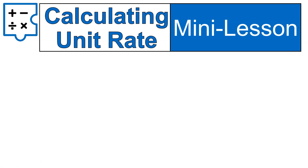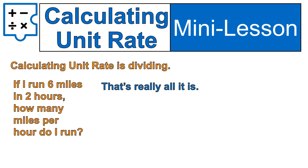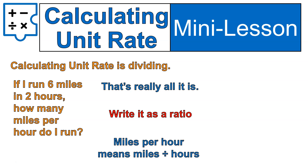Now let's look at an actual question with calculating unit rate. If I'm asked to calculate the unit rate, I'm basically dividing. It's a question of division. So if I run 6 miles in 2 hours, how many miles do I run per hour? This is a ratio, so I'm going to write it as a ratio. Ratios just mean division, and a ratio of miles per hour means miles divided by hours. Miles on the top, hours on the bottom — miles per hour. 6 miles in 2 hours is 6 divided by 2, which gives me 3.